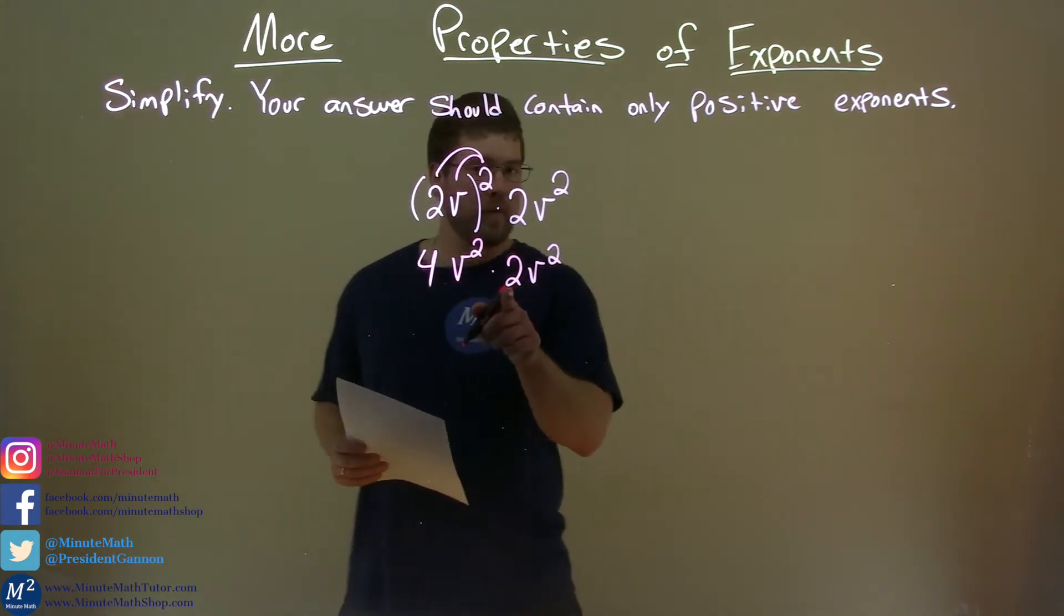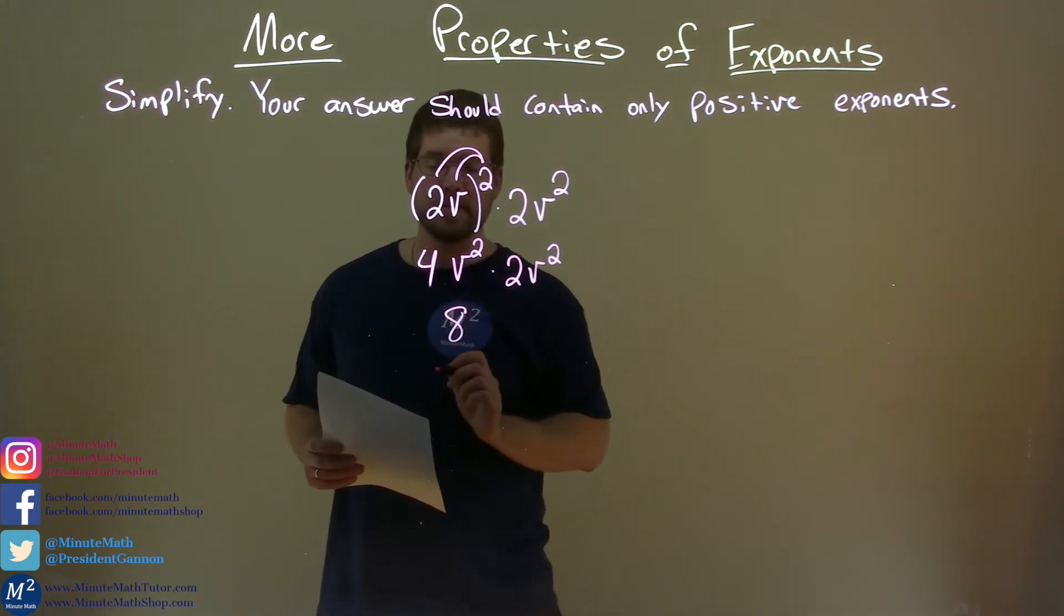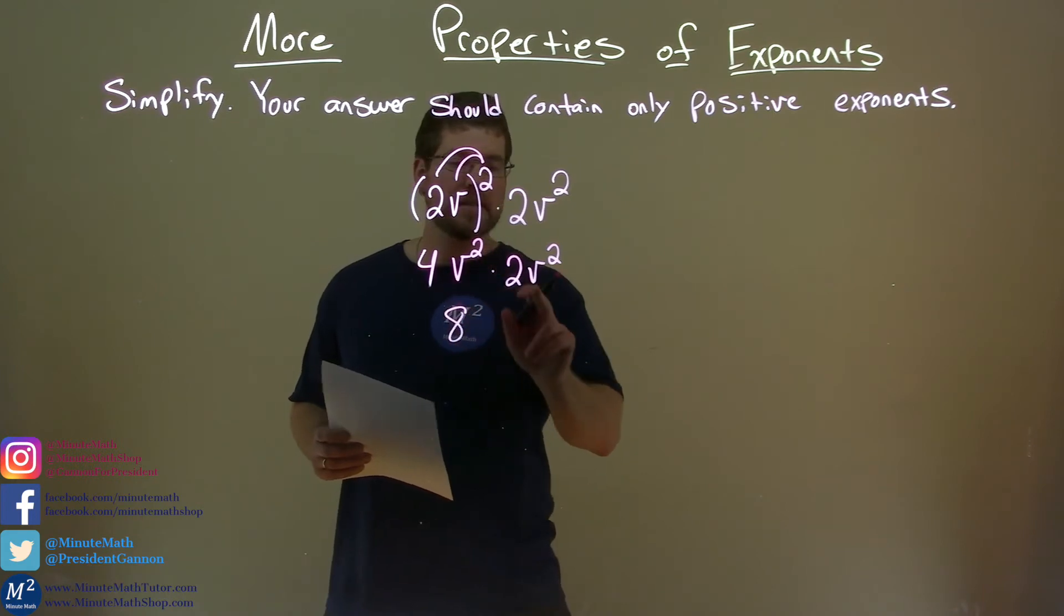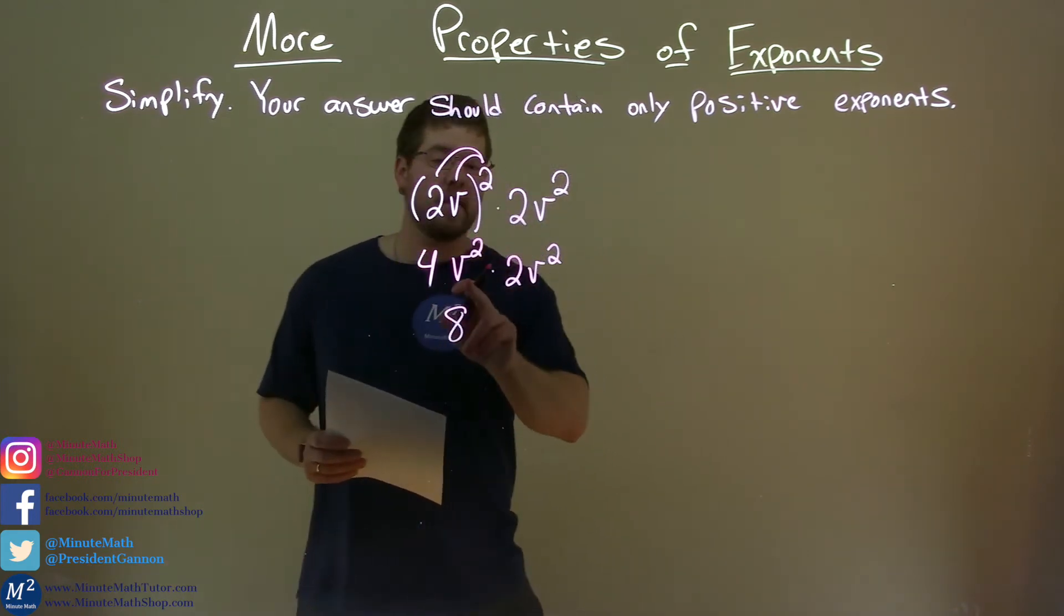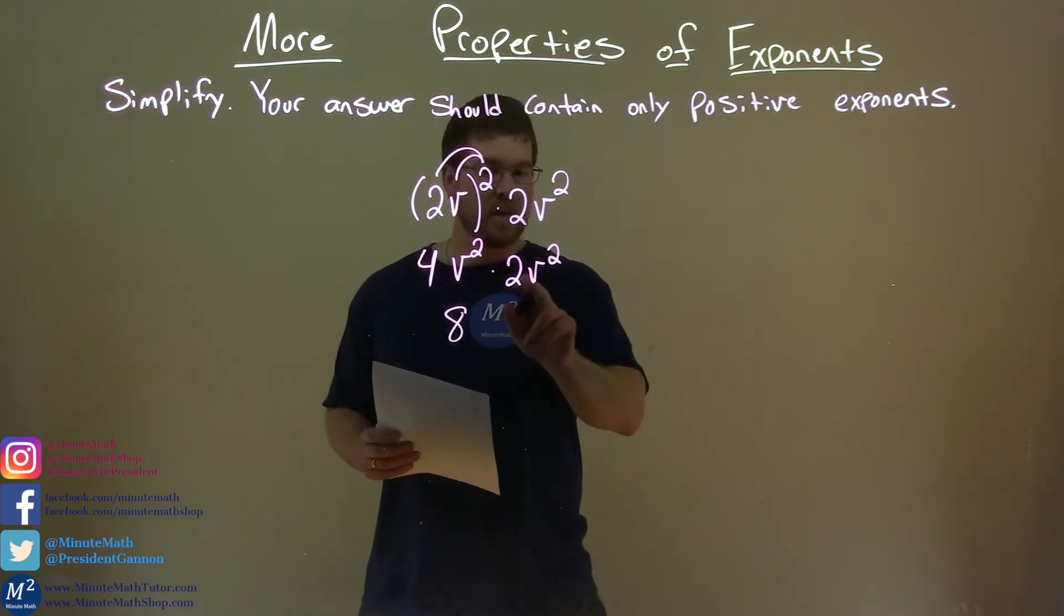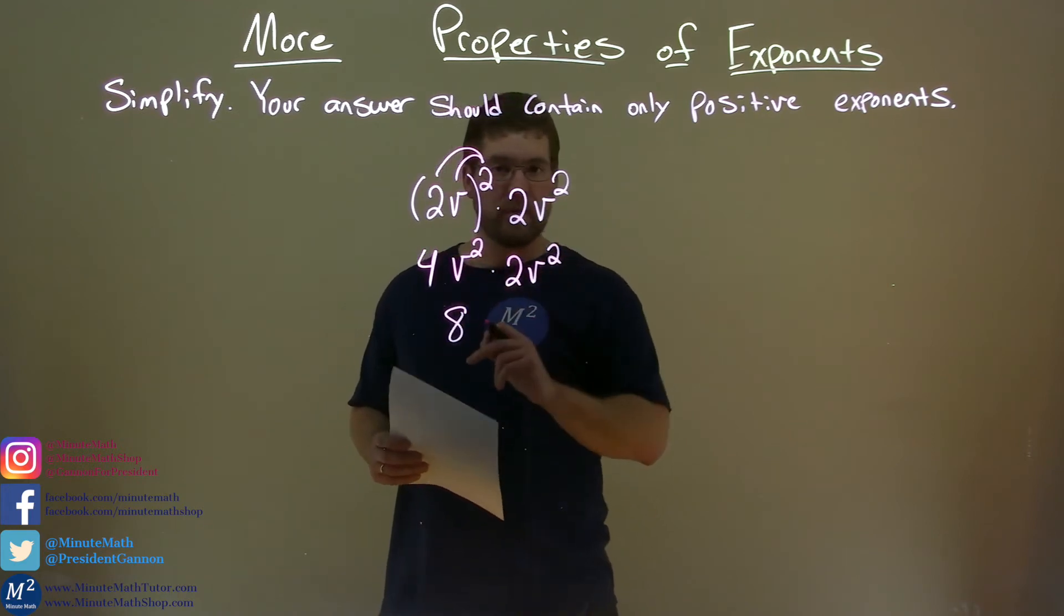4 times 2, let's deal with the coefficients, is 8. Now we have v squared times v squared. Since it's multiplication with the same base, we add the exponents here.